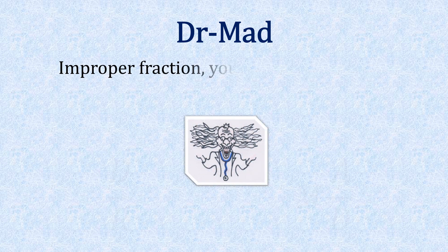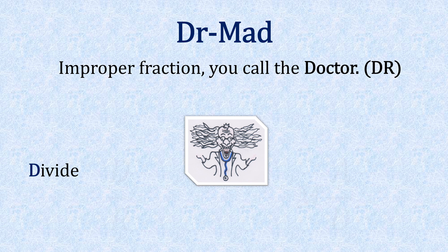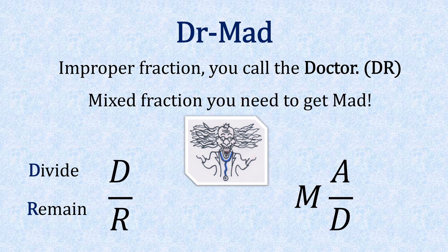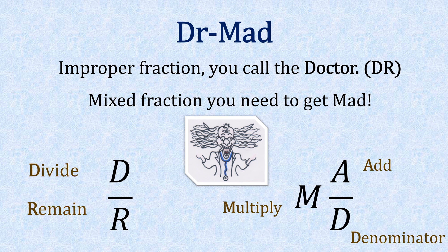So we have Doctor MAD here. For improper fractions, you call the Doctor — DR: D for divide, R for remain. And with a mixed fraction, you need to get MAD: M for multiply, A for add, and D for denominator.